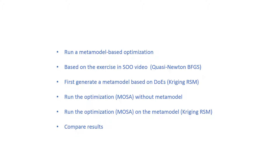To refresh your mind, the previous exercise was about solving a single objective optimization problem using the quasi-Newton BFGS algorithm. In this video, we first generate a meta model based on DOEs using the kriging RSM, then run the optimization using the MOSSO algorithm without meta models on the actual calculator, then run the same optimization on the meta model, and finally compare the results.